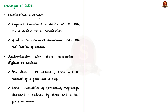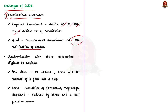Now let us see the challenges associated with conducting simultaneous elections. Firstly, the constitutional challenge. Simultaneous elections require amendment of various articles of the Constitution like Articles 83, 85, 172, 174, etc. Thus, it will need a constitutional amendment with 50% ratification by states, which is going to be a challenge for the central government.